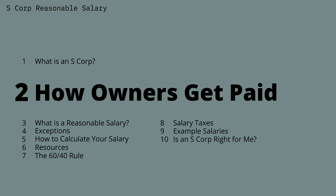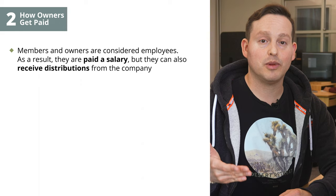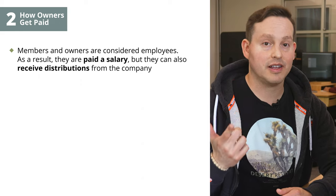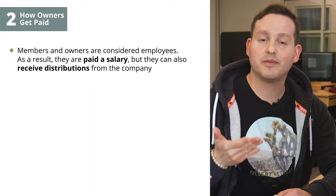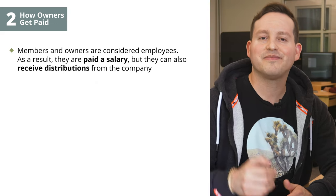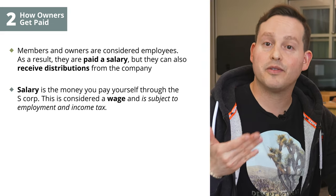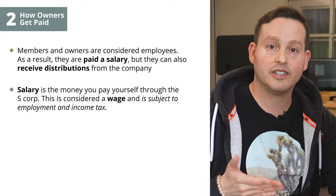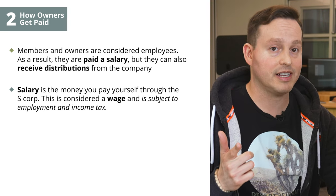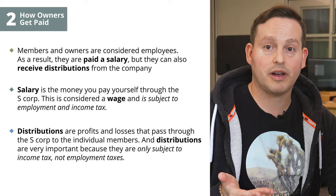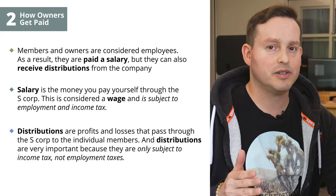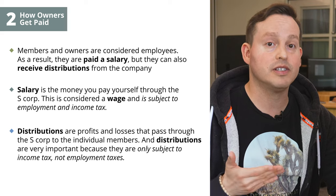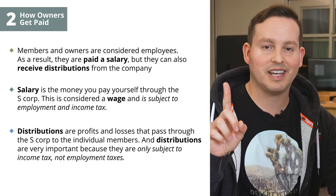Getting paid as an S-corp owner: with an S-corp, members and owners are considered employees. As a result, they're paid a salary. But here's where it gets interesting — they can also receive distributions from the company. Salary is the money you pay yourself through the S-corp; this is considered a wage and is subject to employment and income tax. Distributions are profits and losses that pass through the S-corp to the individual members, and they're only subject to income tax, not employment tax.